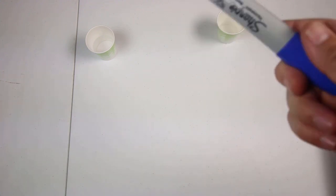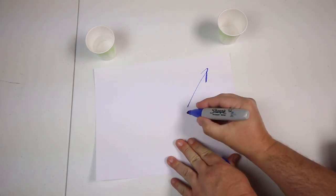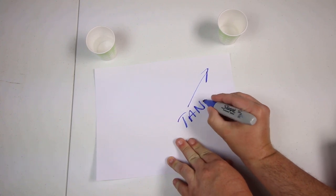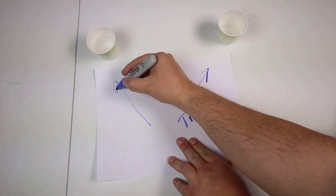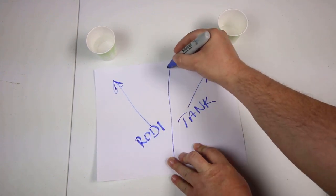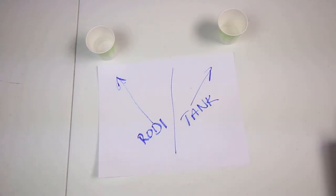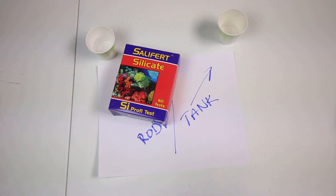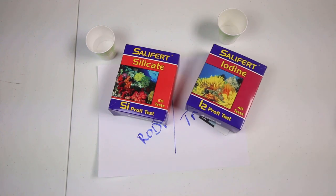Good morning everyone. Welcome to Premium Aquatics. I am Luke and today we're going to be looking at these water samples. So in the right corner we have our tank water and in the left corner we have our RODI. And what are we going to be doing with this water? We're going to be testing it for silicates and iodine.